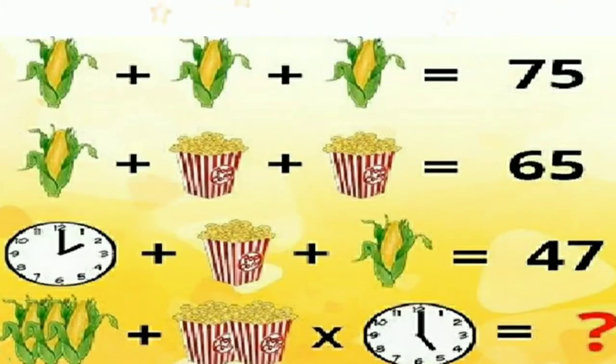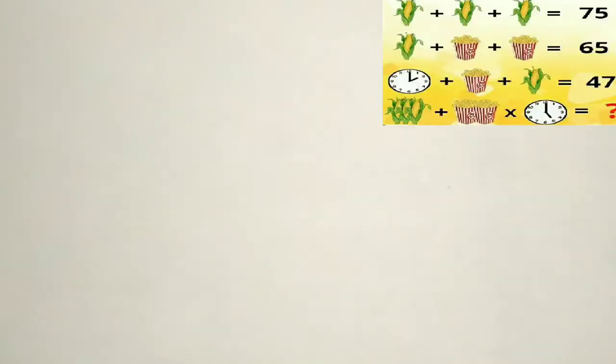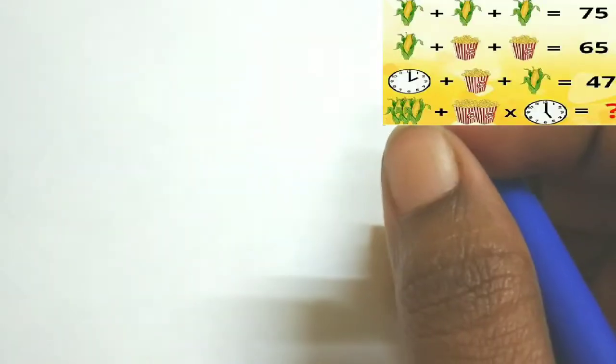The puzzle is sweet corn, popcorn, and clock. We have to give the answer for this one. Solution of the puzzle: if you observe the diagram, in the first line the given is that sweet corn is there, three are there.